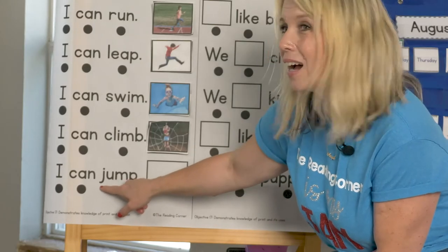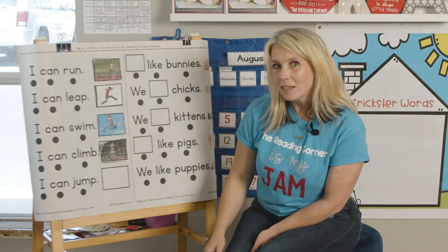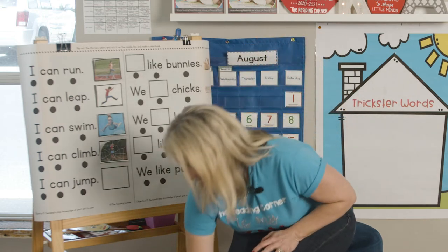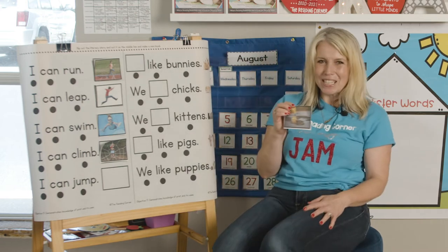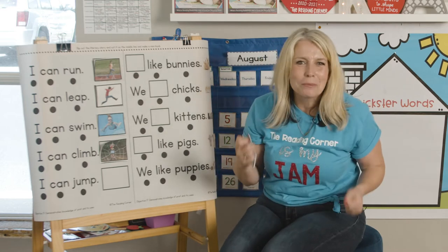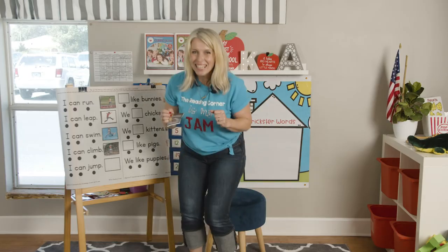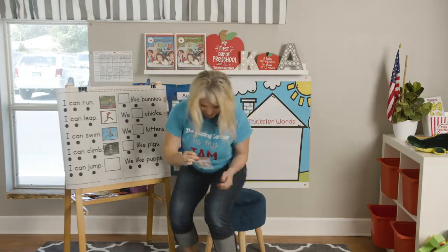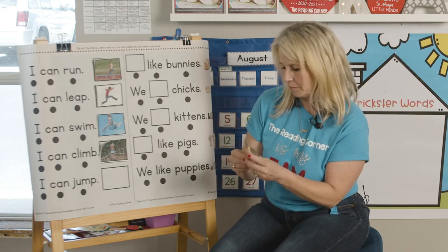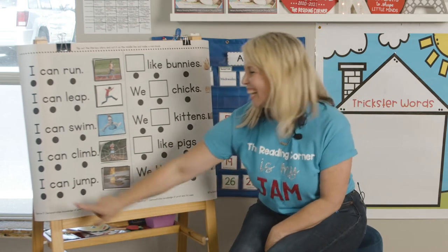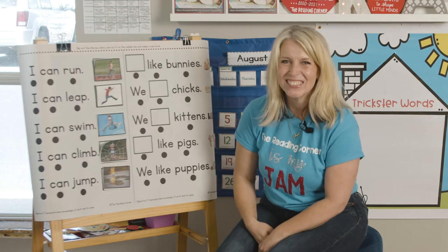It starts with a J. J makes this sound — juh. Can you make that sound with me? Juh. This little girl is jumping. Do you like to jump in puddles? I want you to stand up right now and take a big jump. Pretend you've got your rain jacket on and your rain boots. Pretend there's a big puddle. Ready? Jump. Good job. Let's glue our last picture cue down. Well done. I can jump — just like you. Good job.